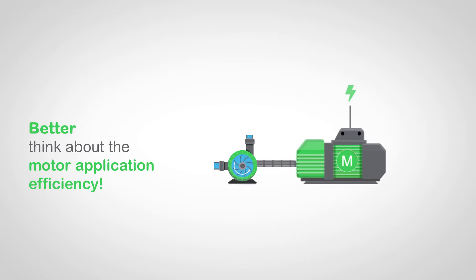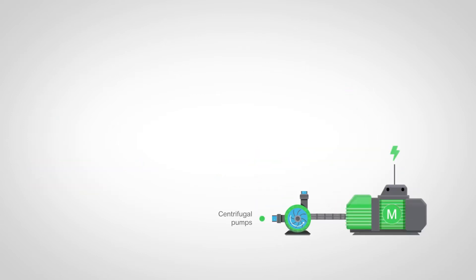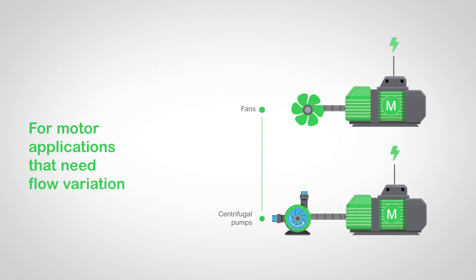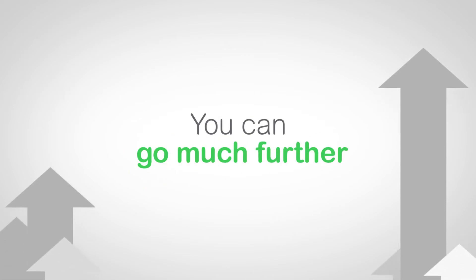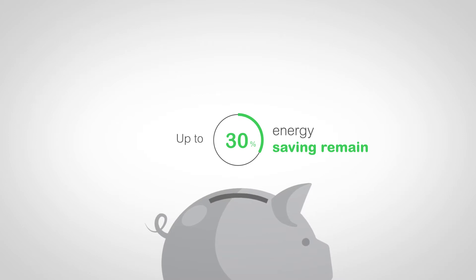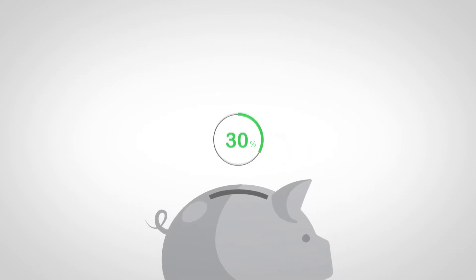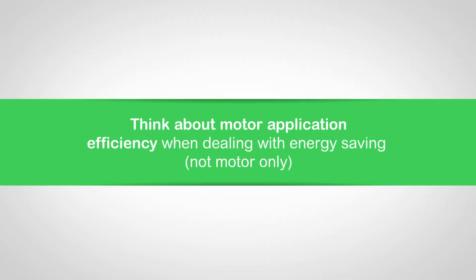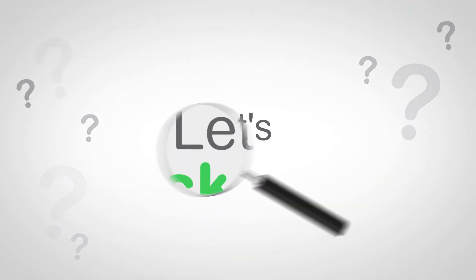Better think about the efficiency of the entire motor application, considering the electric motor and the driven equipment in its regular operation. For motor applications that move fluids and need flow reduction below the rated flow level — such as fans and centrifugal pumps — you can go much further in energy savings and save up to 30% energy consumption. Maximize your energy saving with motor application efficiency, not only motor efficiency.